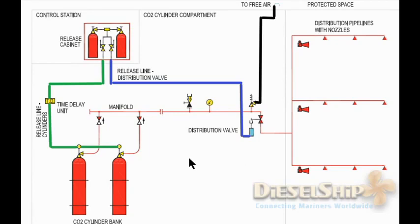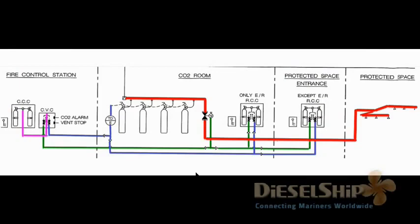That covers the simple schematic system. Now let's concentrate on the actual system present on board a ship. This is one such actual system from a ship I served on. We consider the protected space as the engine room. At the protected space entrance we have the valve control station. Conventionally you also have one in the CO2 room and one at the fire control station, so from three places you can flood CO2 inside the engine room.